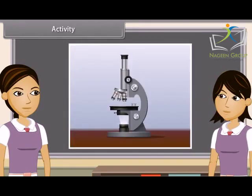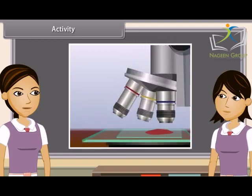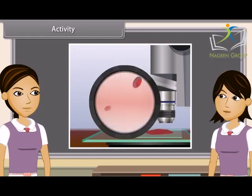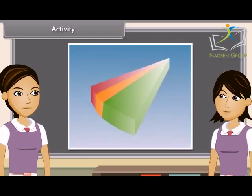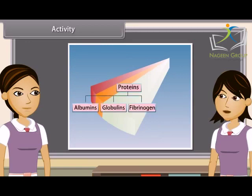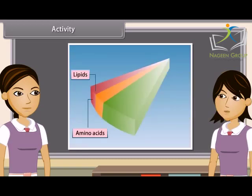Let us do an activity to find out the different types of blood cells. A drop of blood is taken on a slide and observed under a microscope. We can see red blood corpuscles or erythrocytes, white blood cells or leukocytes and platelets. Plasma forms 55% of the total volume of blood. Plasma is a complex fluid containing inorganic salts and organic compounds like albumins, globulins and fibrinogens, glucose, amino acids, lipids, vitamins, enzymes, hormones and waste materials like urea and uric acid.